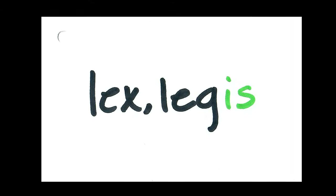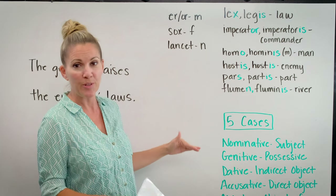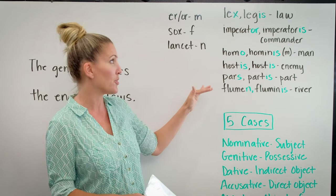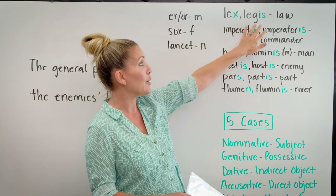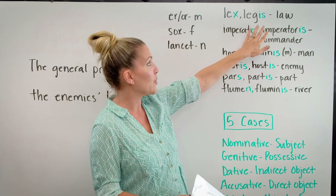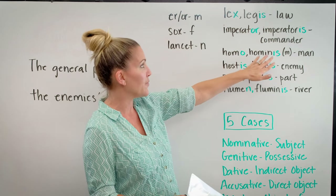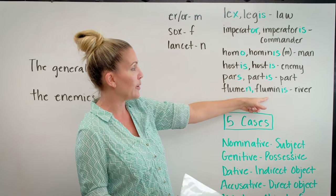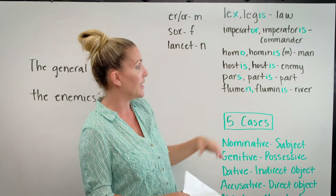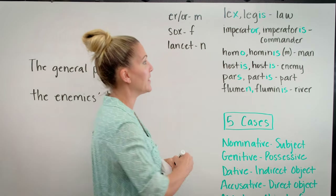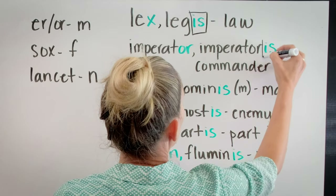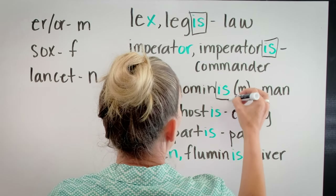Any noun whose genitive singular ends in IS belongs to the third declension. If we want to find the stem for a third declension noun, we look at the genitive singular and drop the IS. You notice that pattern stays the same — all of these words end in IS — so all we need to do to find the stem is drop the IS from the genitive singular.